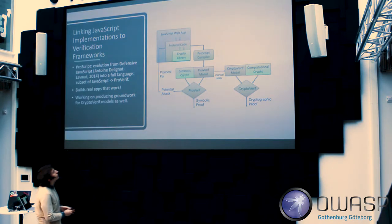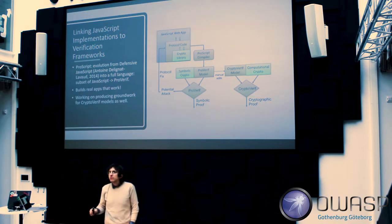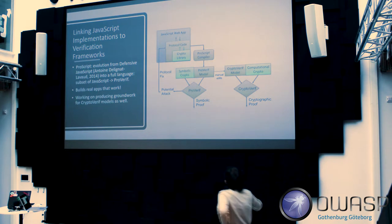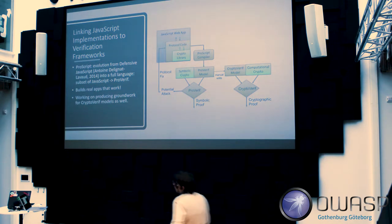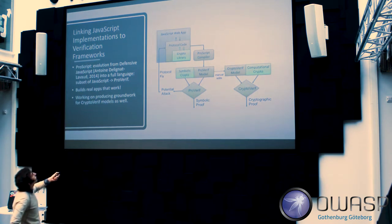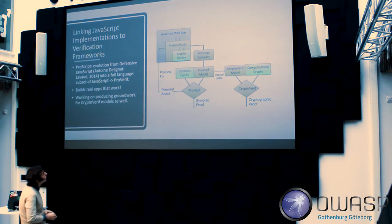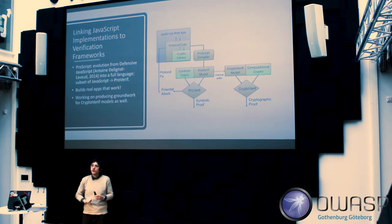We developed a framework called ProScript — a purely functional subset of JavaScript that doesn't allow things like accessing object properties or extending arrays, and requires all variables declared at the top of each function. JavaScript has a purely functional subset, and it turns out the Applied Pi Calculus language used to describe ProVerif models is very similar to ML. So we developed ProScript and a compiler that takes a ProScript implementation of Signal or TLS and generates the ProVerif model immediately.